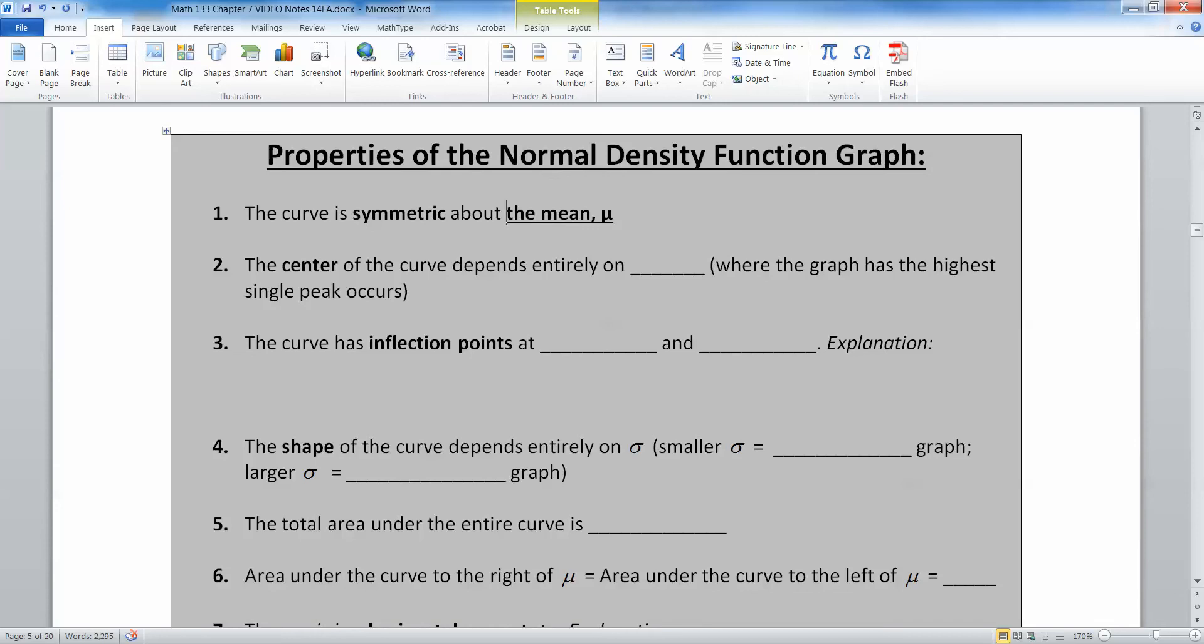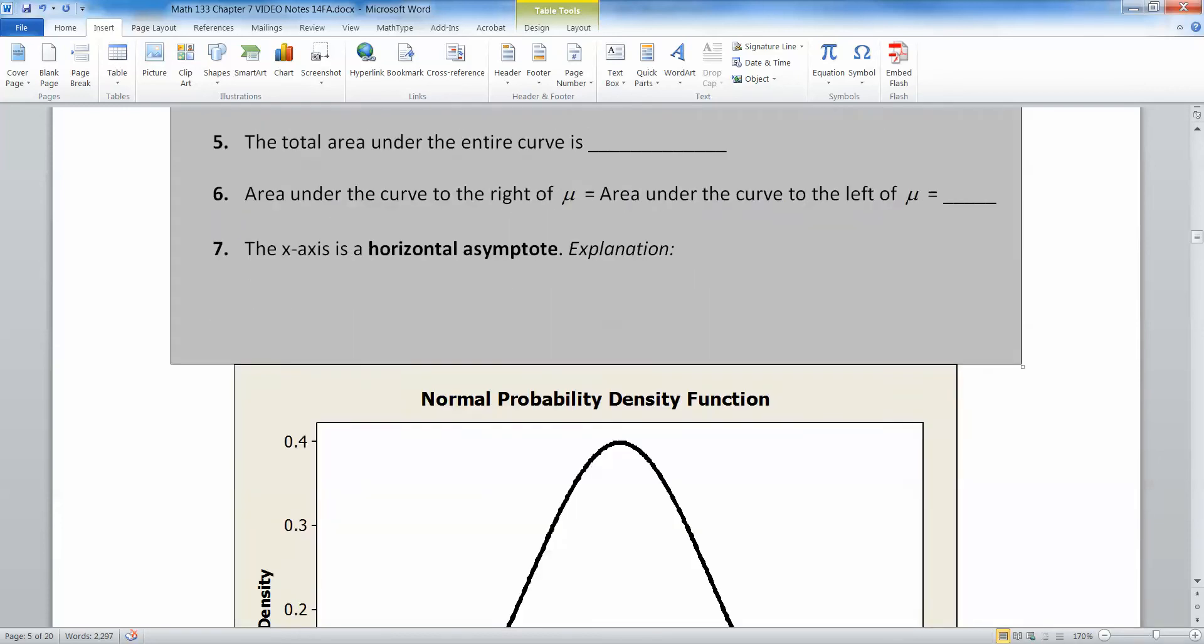Now, the center of the curve depends entirely on blank, where the graph has the highest single peak of curves. Well, again, that would be the mean mu, because where the mean is, that's where the center of your curve is. That's your highest peak. Now, the graph has inflection points at the mean minus the standard deviation and the mean plus the standard deviation.